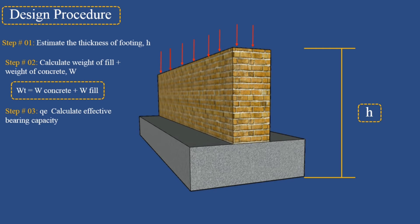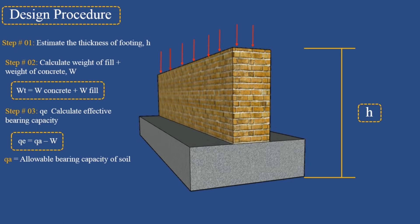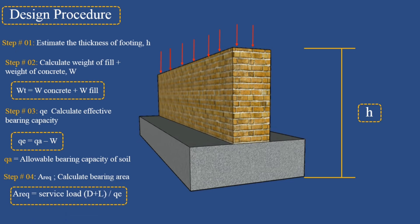Step 3: Calculate the effective bearing capacity qe using the corresponding equation. Step 4: Calculate the bearing area, which equals the service load (dead load plus live load) divided by qe.